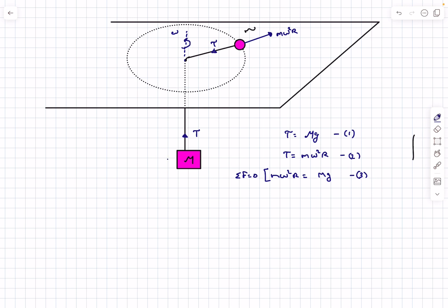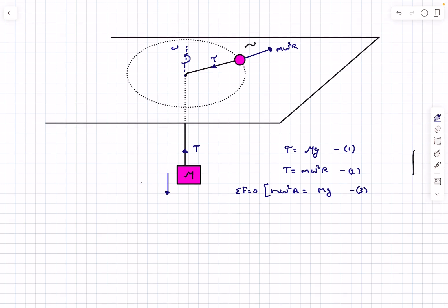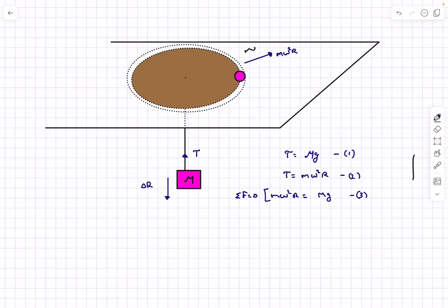So now we are going to be disturbing the system. Basically we are displacing this mass M down by an amount of delta R. Clearly as we pull the mass M downwards by a bit, the radius of the orbit is now going to decrease. So it is going to now become R minus delta R.